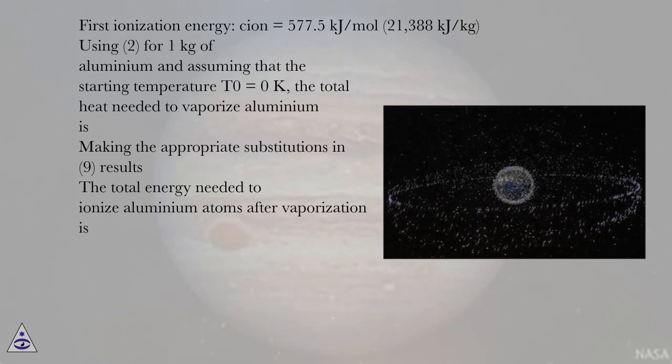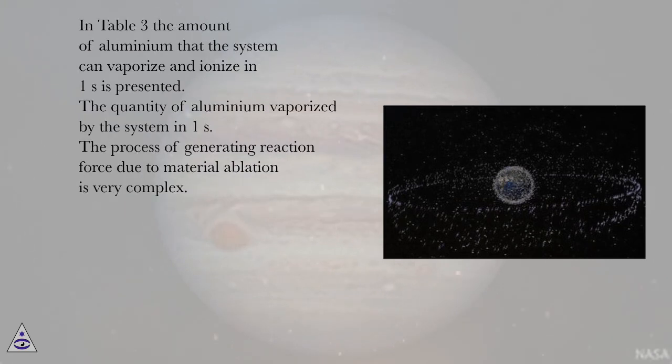Using 2.41 kilograms of aluminum and assuming that the starting temperature T0 equals 0 K, the total heat needed to vaporize aluminum is given by making the appropriate substitutions. The total energy needed to ionize aluminum atoms after vaporization is calculated. In Table 3 the amount of aluminum that the system can vaporize and ionize in 1 second is presented. The quantity of aluminum vaporized by the system in 1 second. The process of generating reaction force due to material ablation is very complex.